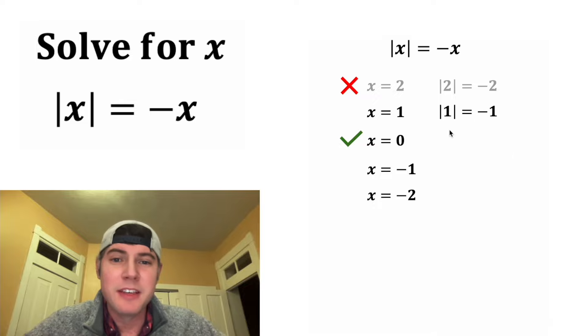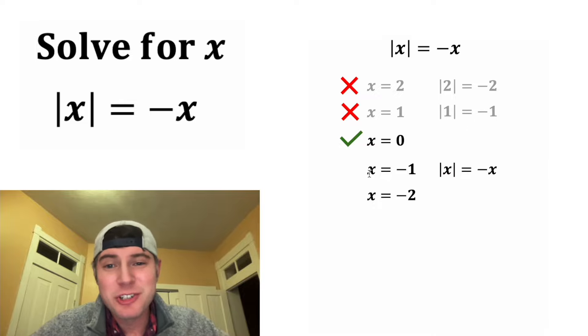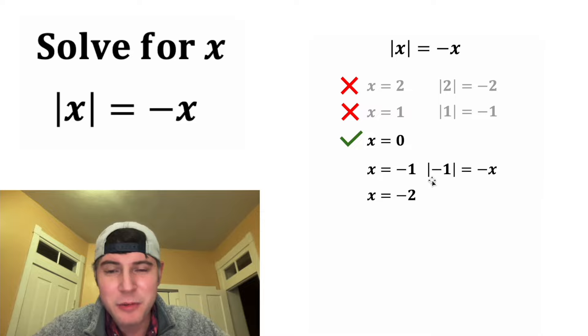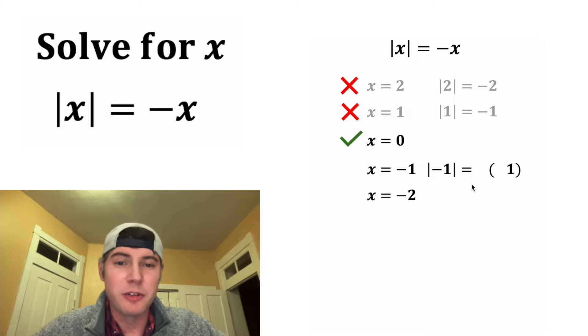Now let's try negative one. If we plug in negative one for this x and negative one for this x, on the right hand side the negative and the negative will cancel each other out, so the right hand side is just one. And this is true - absolute value of negative one does equal one. So that's interesting.